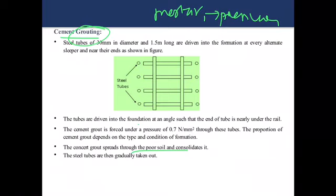Now what we have to do is, in the formation, first we have to drive the steel tubes. The steel tubes should have a diameter of 30 mm and 1.5 meter long. That will be driven into the formation. Usually where the place where the steel tube has to be driven, that is shown here in the picture. Usually at the side, little away from the sleepers, that steel tube has to be inserted. When you insert this steel tube, that should not be inserted vertically. Instead, it will be driven at certain angle such that the bottom of the steel tube will be below the rail position of the rails.